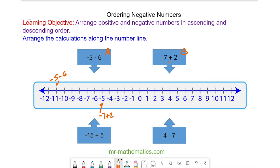And then negative 15 plus 5, we start at negative 15 and we add 5 and we get to negative 10. And finally, 4 take away 7, we start at positive 4, we go to our left 7 places and we have negative 3.